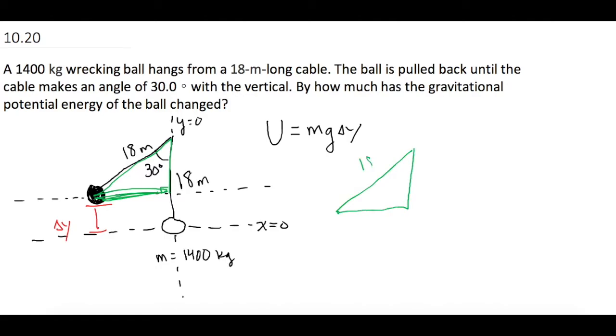So we know that this is 18 meters and we know this angle right here is 30 degrees. Draw the wrecking ball. Okay, so now let's figure out what this distance is right here and whatever that is minus it from 18, that's our delta y.